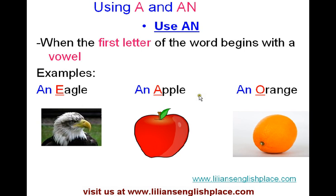When do we use AN? We use AN when the first letter of the word begins with a vowel. Eagle begins with the letter E, so we say 'an eagle.' Apple begins with a vowel A, so we say 'an apple.' Orange begins with the vowel O — we say 'an orange.'